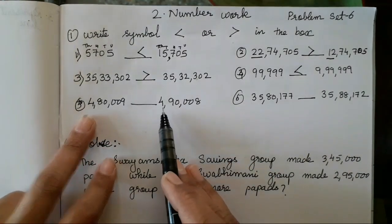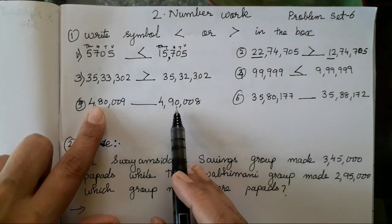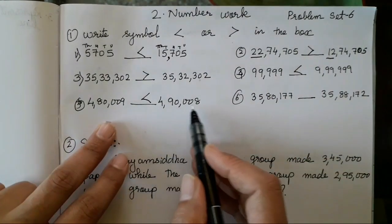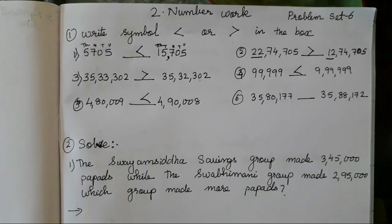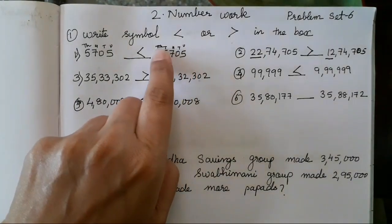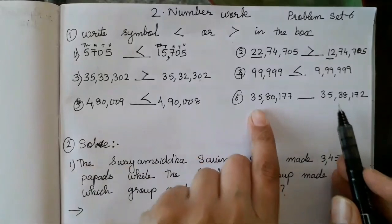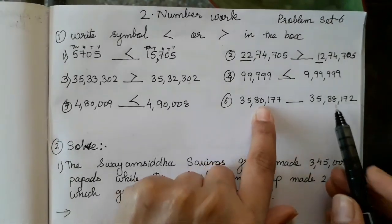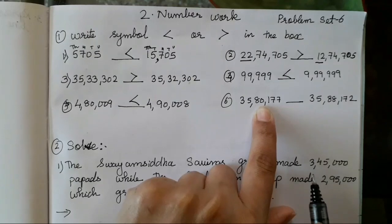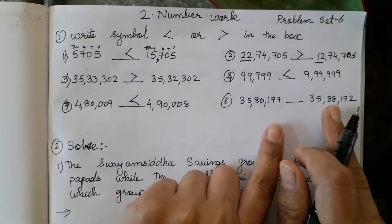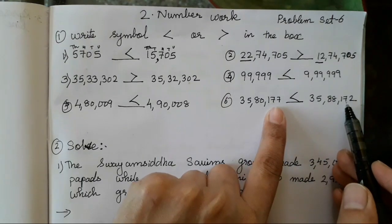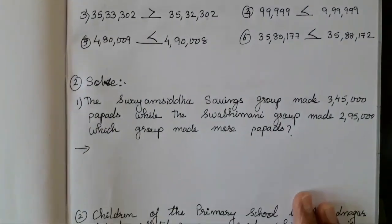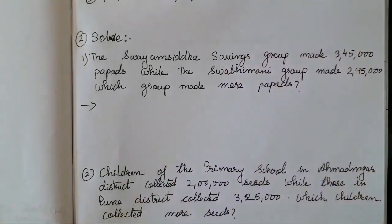Now let's move on to the next number. 4 lakhs is over here, 80,000 here, and 90,000 has been given over here. So, don't read the next numbers — directly you all can write that 90,000 and 4 lakhs 90,000 is greater than 4 lakhs 80,000. It is very simple. If you are finding it difficult, you can always write the units above the numbers. Next is 35 lakhs and 35 lakhs — both numbers are in lakhs. Over here 80,000 and over here 88,000 has been given. So, obviously, 88,000 is going to be greater. You all can calculate in your mind also. I hope this is clear — it's very easy, and if you've followed my other exercises, this will be very easy to understand.